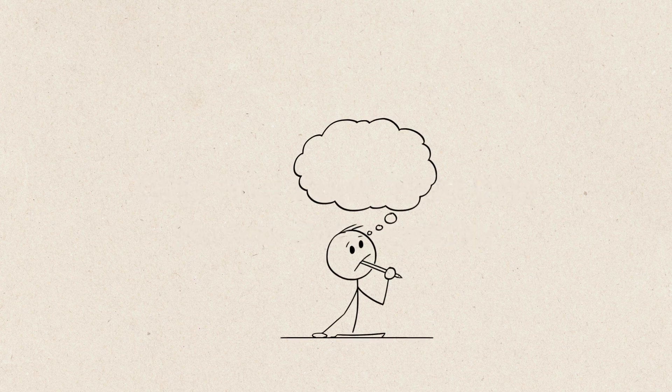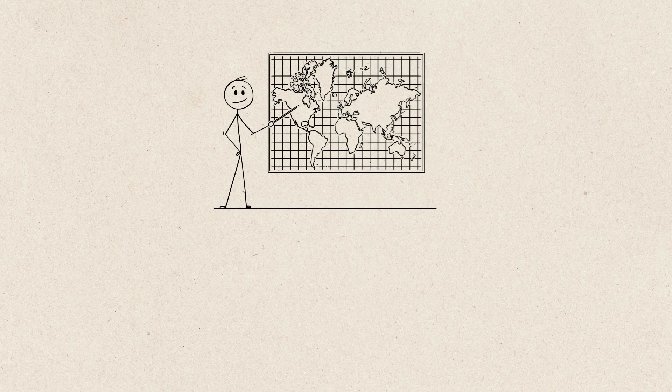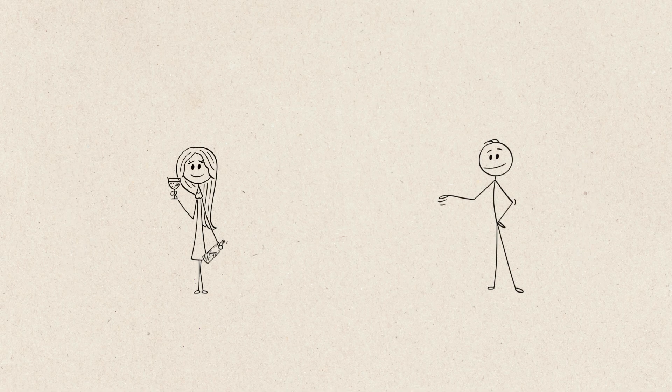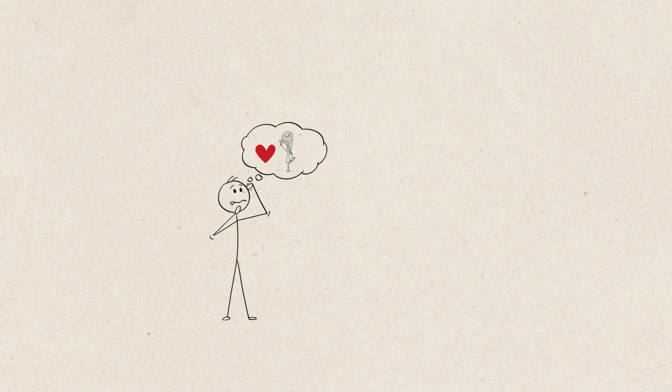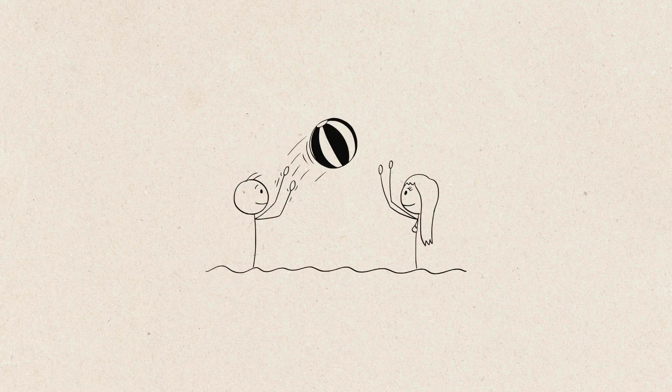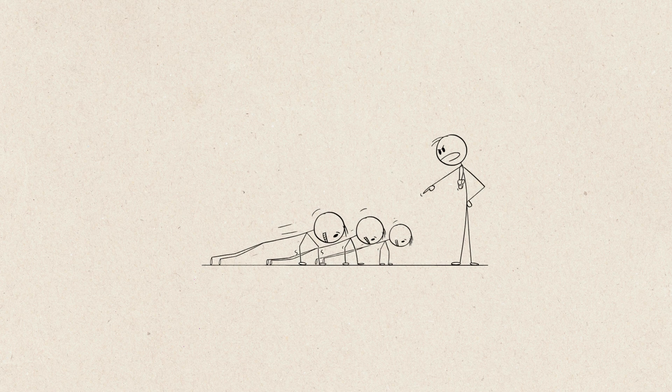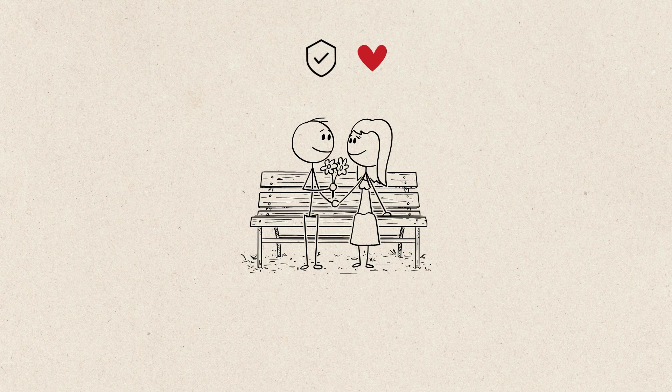Why your brain picks one person over another. So, if love is just chemistry, what actually makes your brain choose that person? Turns out, there's more happening beneath the surface than you realize. Ever noticed how the more you see someone, the more attractive they seem? That's called the mere exposure effect. Your brain loves what it recognizes. This is why childhood friends, co-workers, or even gym buddies can suddenly become crush material. The more familiar someone feels, the safer and more appealing they become.